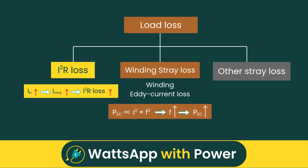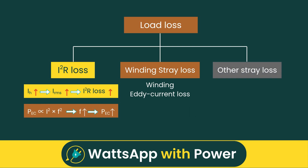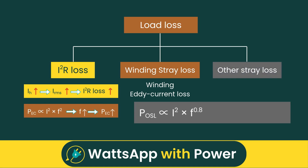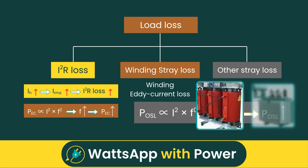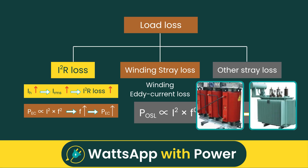Third, harmonic currents contribute to increased other stray losses occurring in core clamps, shields, and structural parts. While these losses also rise with the square of current, they do not increase as sharply with frequency as winding eddy current losses do. This may not be critical in dry-type transformers, but it becomes more consequential in liquid-immersed transformers, where the extra heat affects the insulating oil.